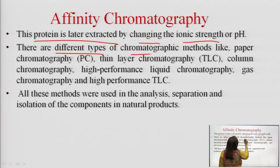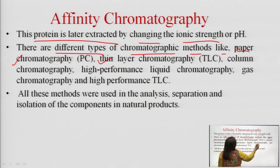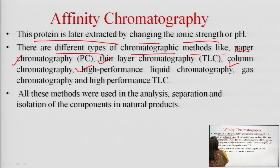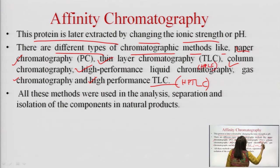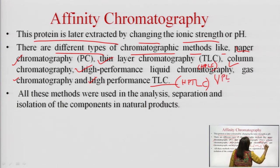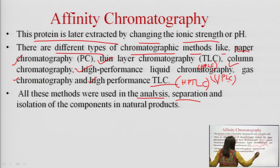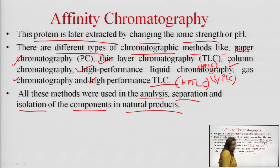Different types of chromatographic methods include paper chromatography, thin layer chromatography, column chromatography, high performance thin layer chromatography (HPTLC), HPLC, and nowadays ultra-high performance UPLC. All these methods are used for analysis, separation, and isolation of components in natural products.